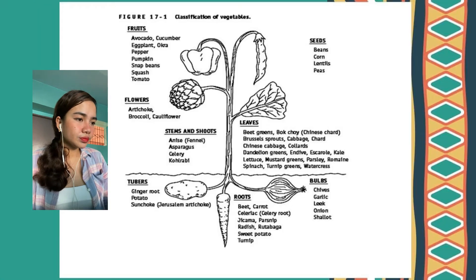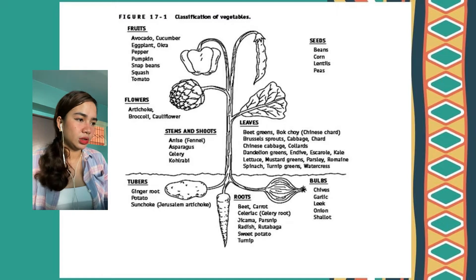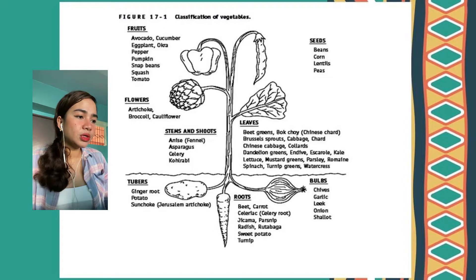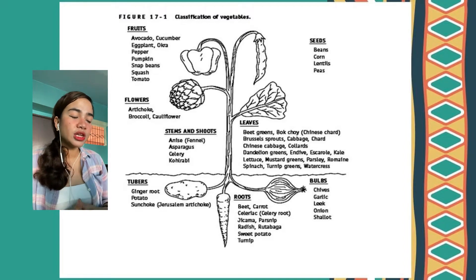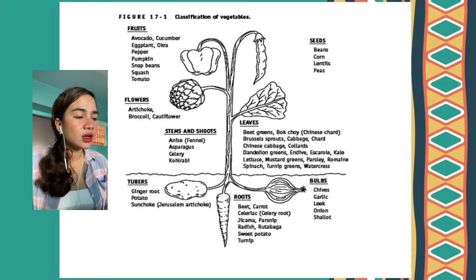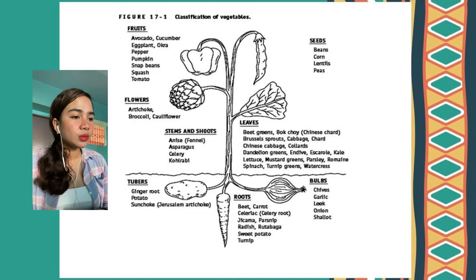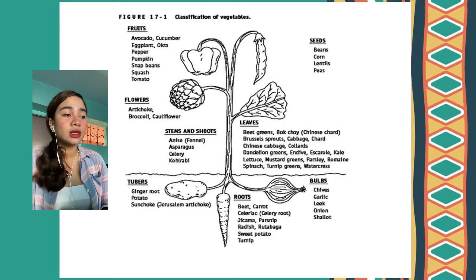As you can see here, this is the classification of vegetables. The part of the plant from which vegetables originate is one of the methods to classify vegetables. As we can see in the figure, vegetables may be derived from almost any part of a plant.